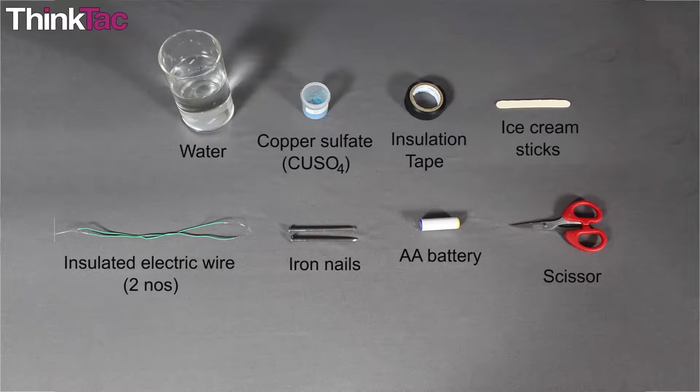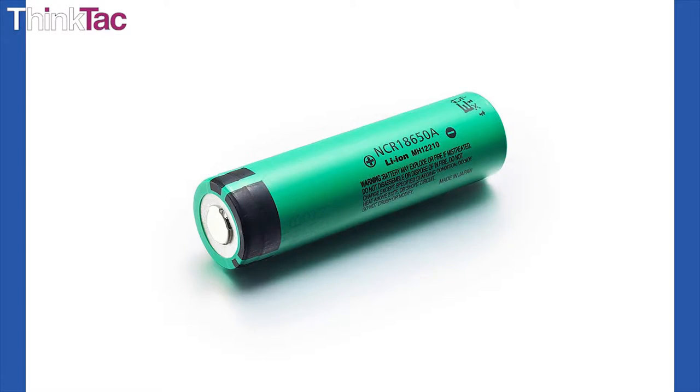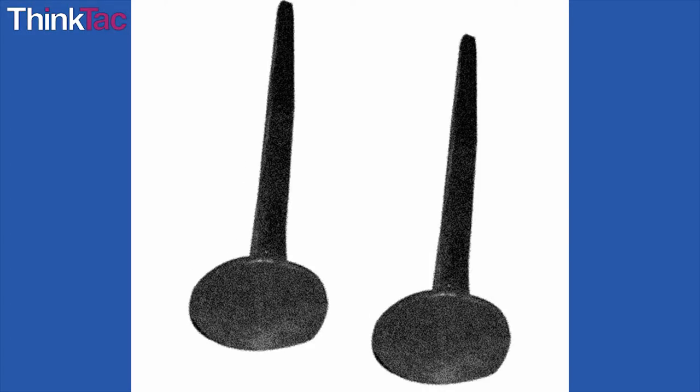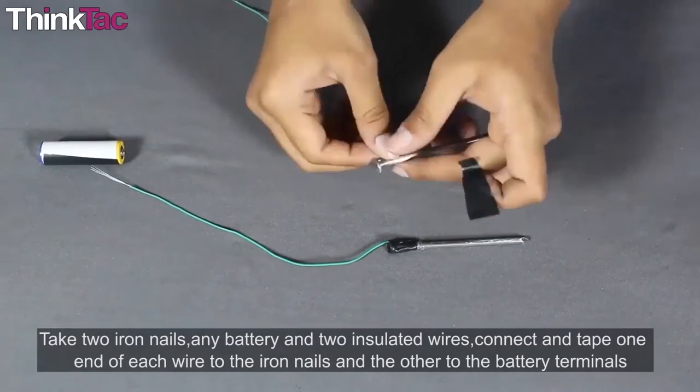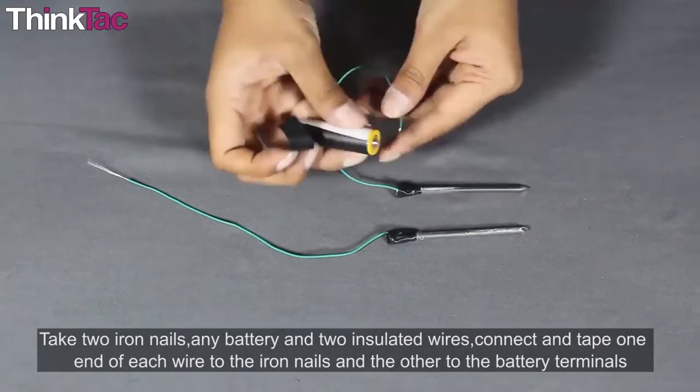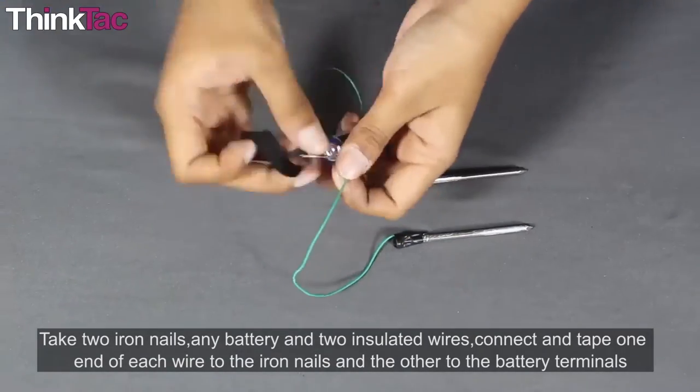For today's activity, you will need a few materials like batteries, wires, two iron nails, and some salt. You must tape the nails and the wires properly, otherwise the wires may interfere with the reactions.